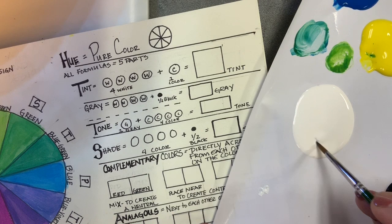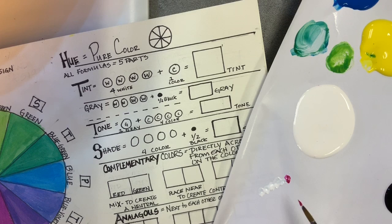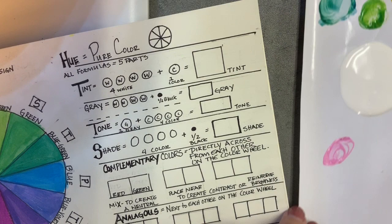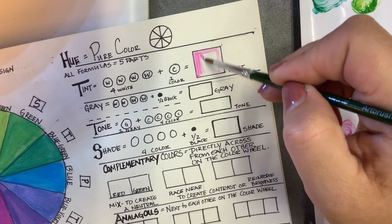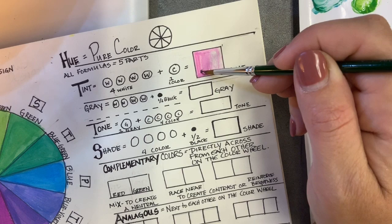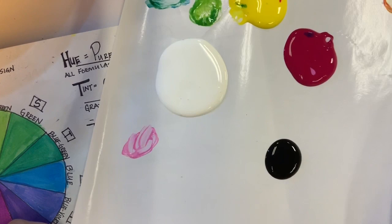Each color that you mix—all these formulas—are going to be five equal parts. You see that I put four dots of white to one dot of color to create a tint. A tint is really a pure color or a hue plus white. And you can—the more white you add, the lighter the tint.